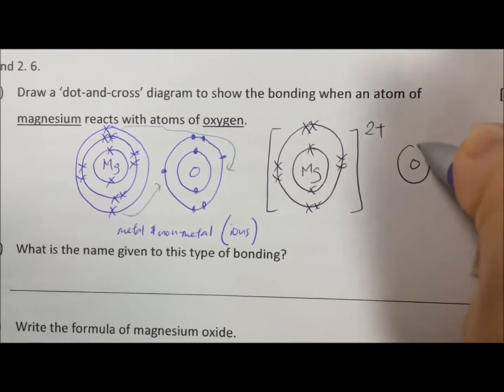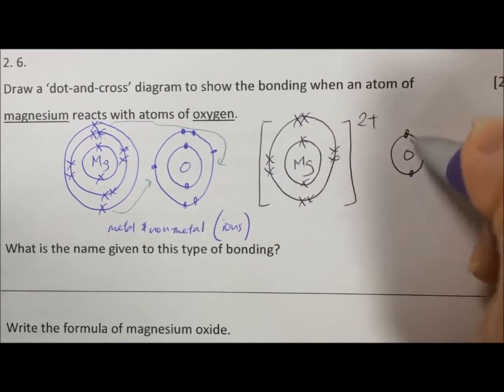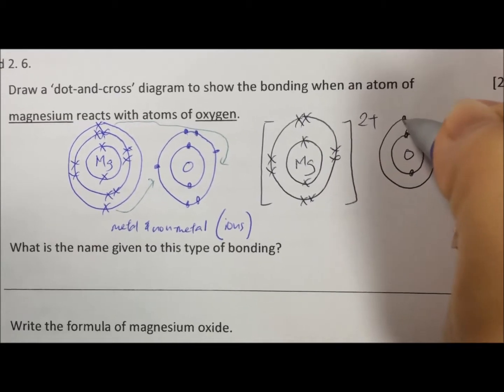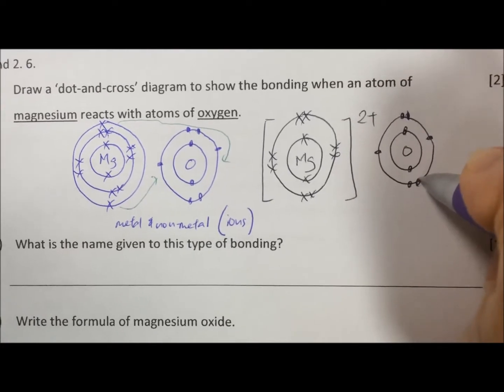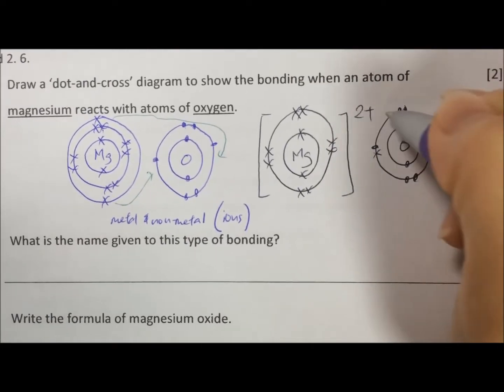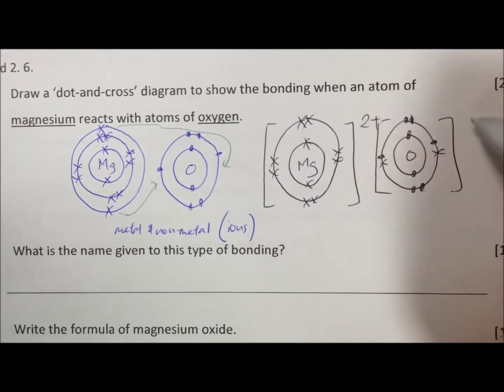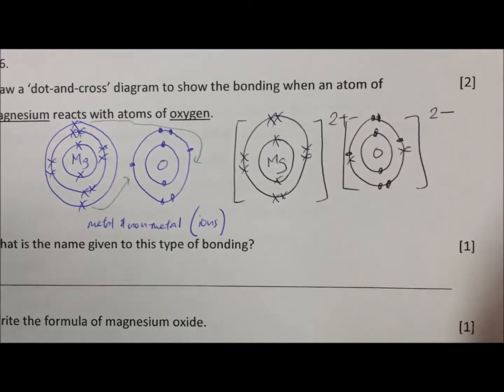Oxygen, you draw 2.6. With the added 2 crosses, make sure you draw the added 2 with a cross. You put down a bracket and you put 2-. Group 6 will be 2-.